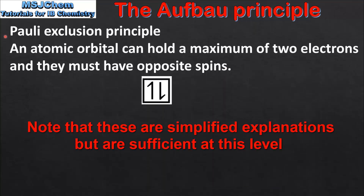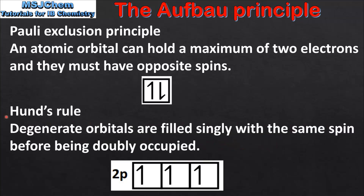Before starting with electron configurations we look at the Pauli Exclusion Principle and Hund's Rule. The Pauli Exclusion Principle states that an atomic orbital can hold a maximum of 2 electrons and they must have opposite spins. The single-headed arrows represent electrons, so we can only put 2 arrows in the box and they must have opposite spins — one pointing up and the other pointing down.